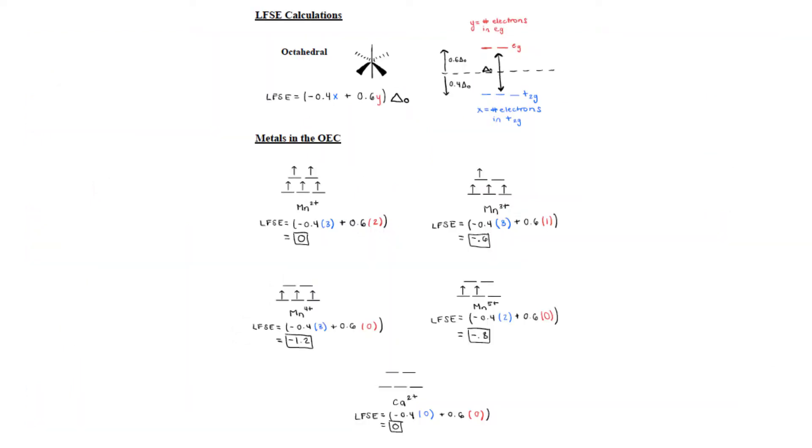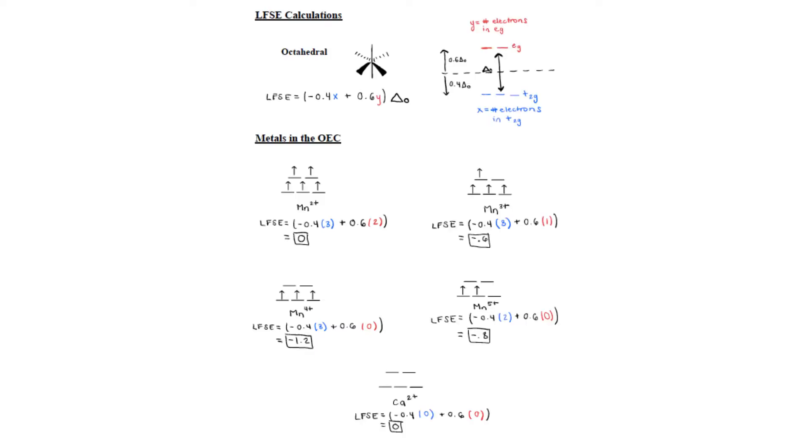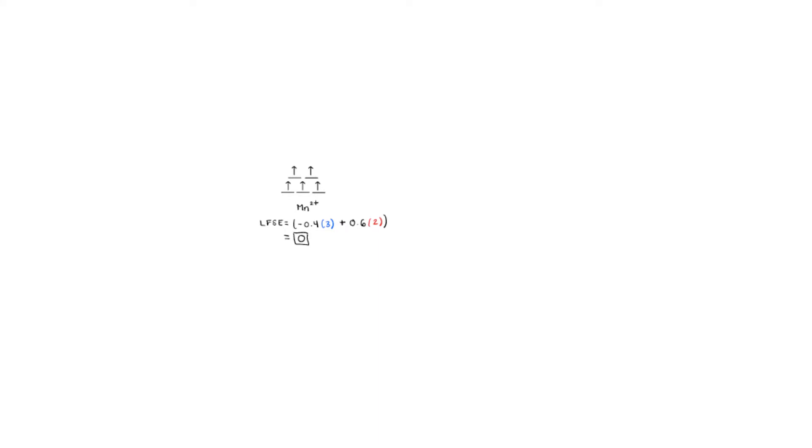The ligand field stabilization energy or LFSE splitting diagrams and calculations for the 5 metals in the OEC can be seen here. The more negative the value for the LFSE, the more stable it is. Therefore, manganese 4+ is the most stable because it has an LFSE value of -1.2. Manganese 2+ and calcium 2+ both have an LFSE value of 0, so they are the least stable. However, they are the most labile, meaning they are very fast to react.